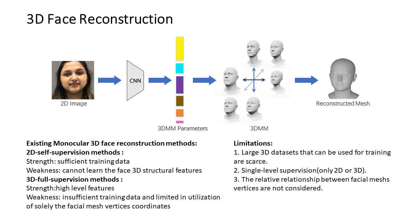Monocular 3D Face Reconstruction starts by feeding a 2D facial image into a convolutional neural network to extract facial features. Once the facial features are extracted, they are mapped to a set of parameters to the 3DMM model, and then you get a reconstructed mesh.